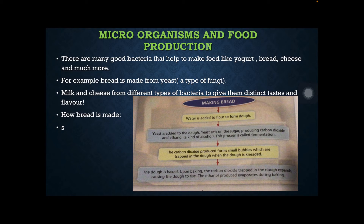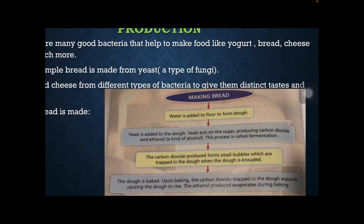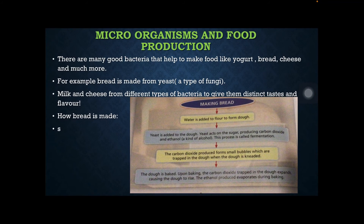How bread is made: water is added to flour to form dough. We need the flour, then we add some water and oil to mix it in to form a soft dough. Then yeast is added to the dough.